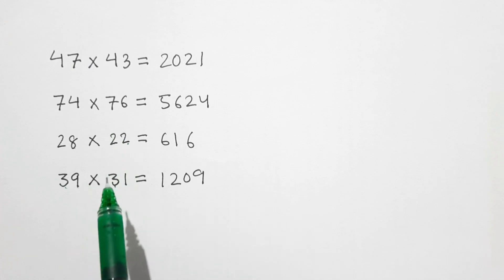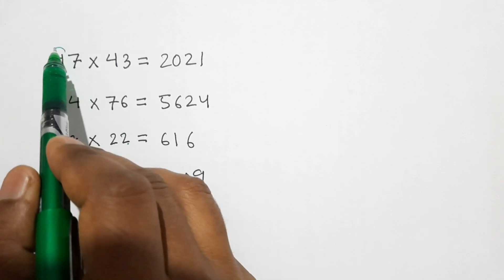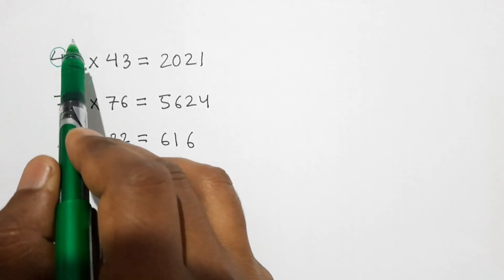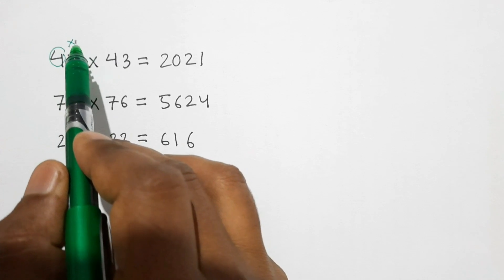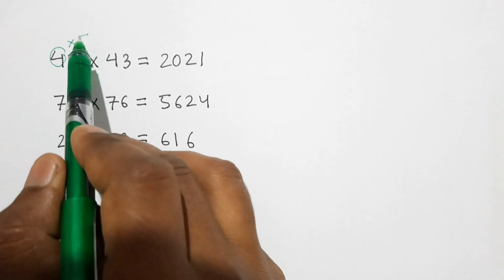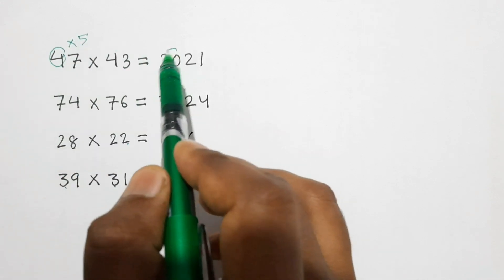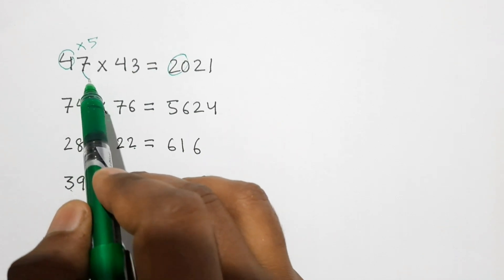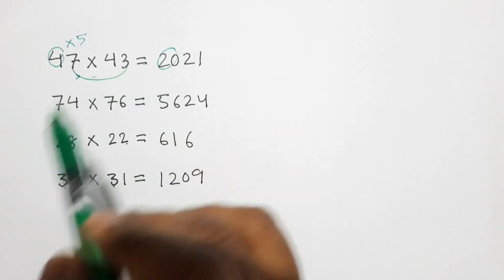So in this type of numbers we can simply multiply this 4 by one more than 4, that is 5. That is 4 times 5 is 20, and then multiply 7 and 3, 7 times 3 is 21.